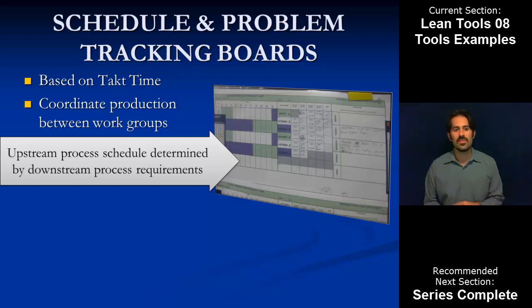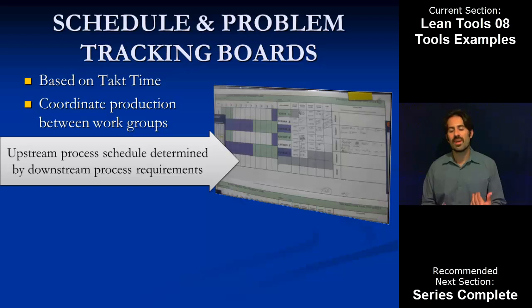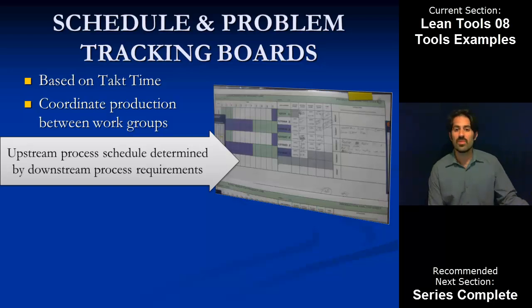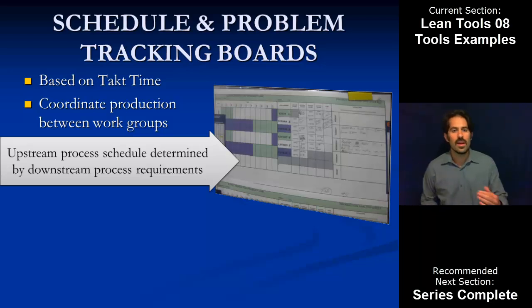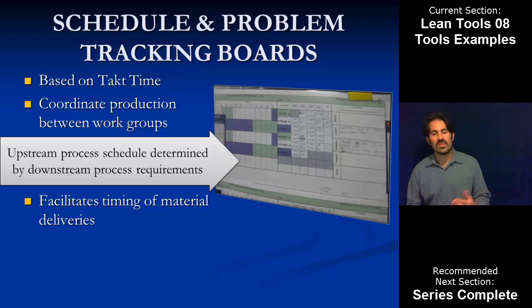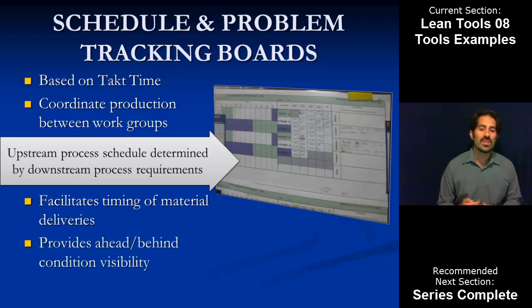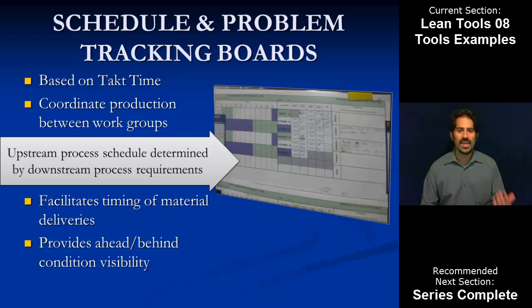The key thought about how these boards are set up is that the upstream process schedule is determined by the downstream process requirements — just like a pull system. We set it up by asking: what is the customer need? What products, when, and how? Then what does the next upstream process need to give shipping what it wants? Iteratively, we start at the end with the customer all the way back through the process, making sure everyone is working on what they need to in order to get the customer what they want. This also helps coordinate material and inventory handling to takt time, and provides visual management of head-behind conditions at a glance.